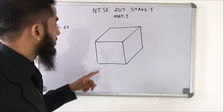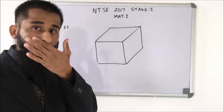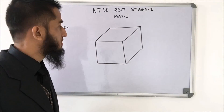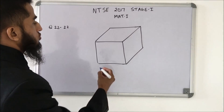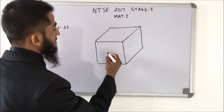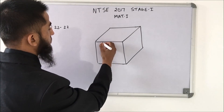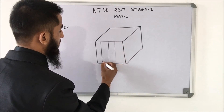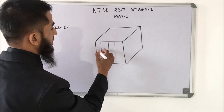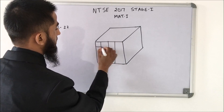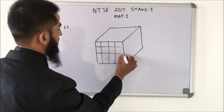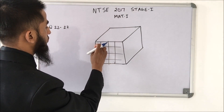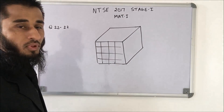The question says that a cube is given and divided into 64 small cubes. To divide this face into 16 parts, I draw 3 lines to get 4 columns, then 3 more lines, giving 4×4 = 16 small squares on each face.